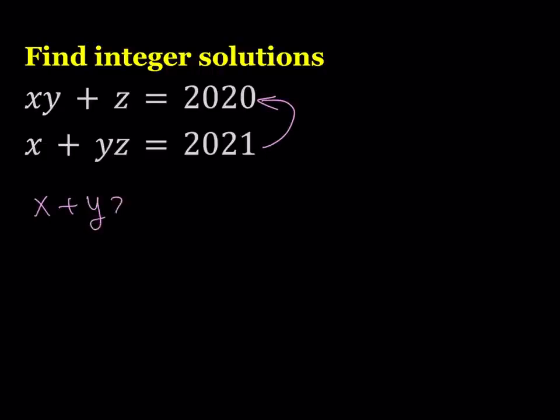Let's subtract: x + yz minus xy + z. The difference will be one. Now I'm going to expand it: x + yz - xy - z = 1.